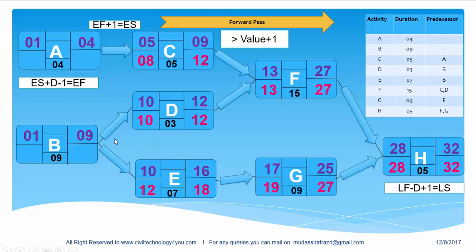Now we are moving to the next level and here this activity is connected with two activities. So which value will we take, 10 or 12? Remember in forward pass we choose the greater value and add one to define the early start of the next activity. But here we will choose the lesser value and subtract one. So the lesser value is 10. So 10 minus 1 gives us 9. So 9 is the late finish of this activity and 7 is the late finish of this activity. What will be the late start? 9 minus 9 plus 1 gives us 1. So late start is 1 here and late start of this activity will be 4.